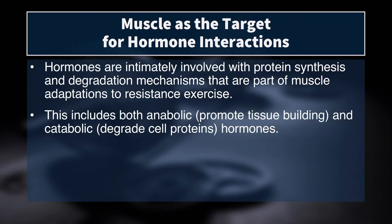In our context as future strength coaches, sports scientists, or performance industry professionals, our main concern is muscle — how do hormones affect muscle tissue? Hormones are intimately involved with protein synthesis and degradation mechanisms that are part of muscle adaptations to resistance exercise. So not only do certain hormones help you build up more muscle tissue, but some actually break muscle tissue down. This includes both anabolic and catabolic hormones — anabolic primarily being testosterone and secondarily growth hormone, and catabolic being things like cortisol.